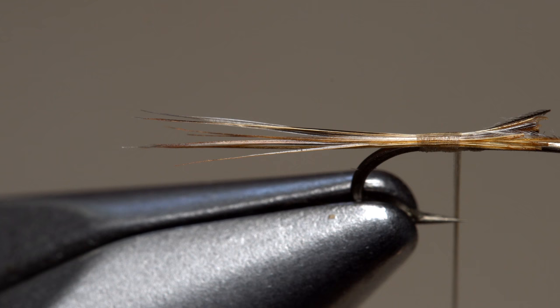Mixing hackle fibers to form a tail on a fly like an Adam's isn't difficult, but this little trick from Charlie Craven really makes it easy.